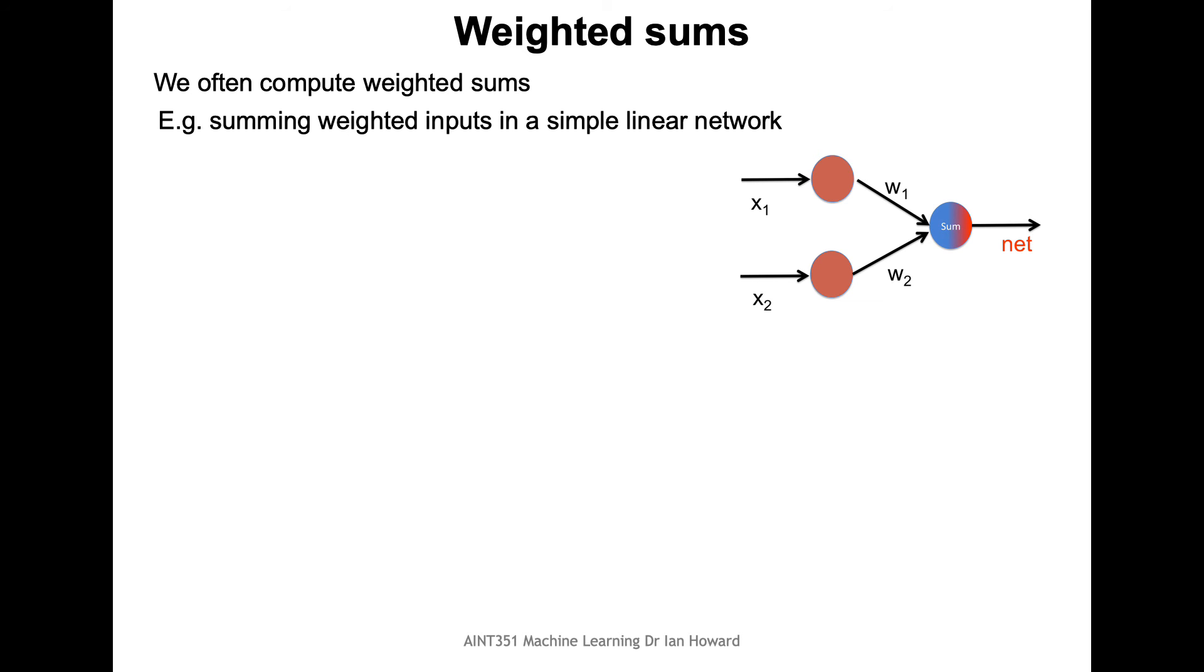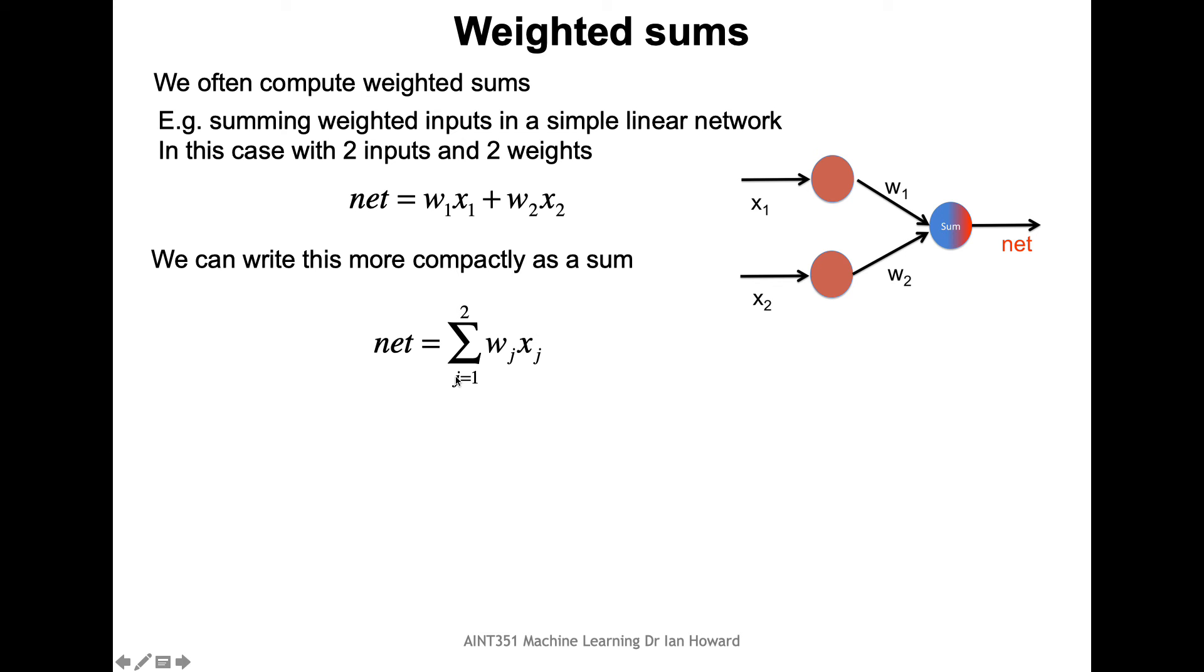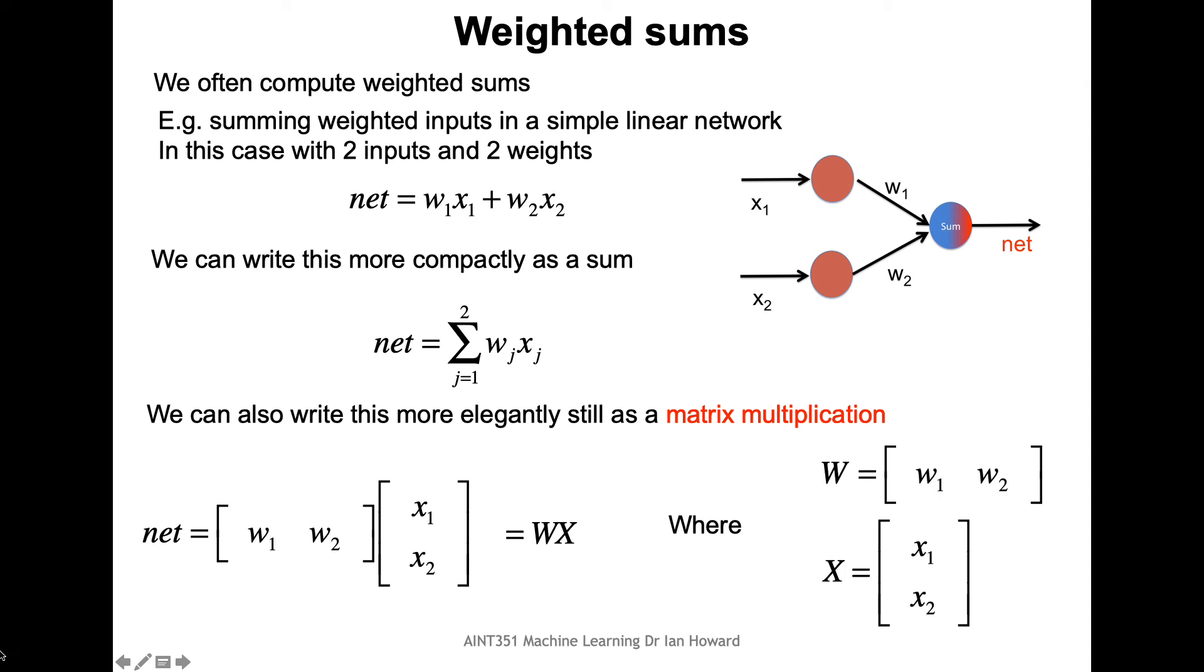So we often compute these weighted sums for, for example, building networks. And that's one of the reasons we're particularly interested in doing this. In this case we've got a network with two inputs and two weights, and the output of this network is going to be the weighted sum of the inputs. So the output is going to be w1 times x1 plus w2 times x2, and that's exactly what we have previously. And again we can write that as a sum. In this case there's just two elements. But even more elegantly, let's write it as a matrix multiplication. In this case it's just this simple 1 by 2, so it's rows by columns, 1 row by 2 columns multiplied by 2 rows by 1 column. This is a 2 by 1, so the output is going to be again wx, where in this case the w is just the two weight values, and in this case the x vector is just the two data points.